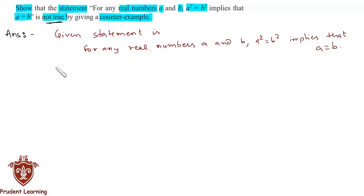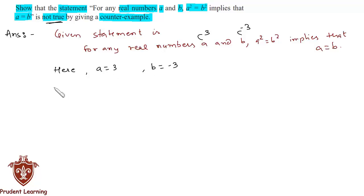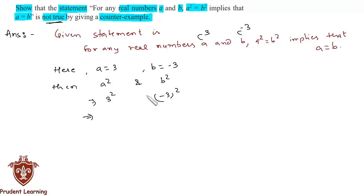Let us assume that a = 3 and b = -3. Then a² would be 3² and b² would be (-3)², but we know that both of them give us 9. So we can say that a² = b², but we know that a is not equal to b because -3 is not equal to 3.